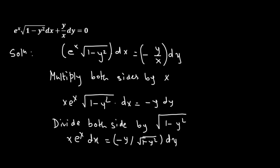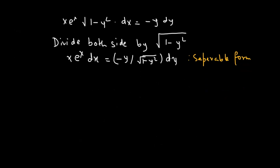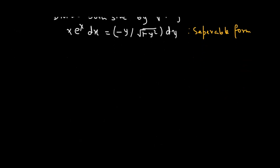And clearly this is in the separable form. Now that we have our differential in the separable form, we need to integrate both sides. Let's consider the first integral, the integral on the left hand side: the integral of x times e raised to the power of x dx.